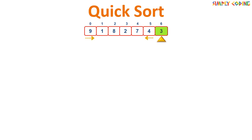We simultaneously move in from both ends of the array towards the center. When moving from the beginning, we compare each element and stop if we find one larger than the pivot — so we stop at 9, which is greater than 3. When moving from the end, we stop when we find any element lower than the pivot — so we stop at 2. We then swap these two.